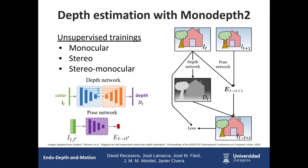MonoDepth2 is the depth estimation neural network we opt for in this work. Its main feature is that it only needs a monocular image at input to estimate its depth map. Another great advantage is that it's trained in a self-supervised way — you don't need ground truth of the images. The basic idea is to train a neural network that learns to predict the appearance of a target image from the point of view of another source image. In monocular training, the two temporally adjacent images are used as source images; in stereo training, the other stereo pair is used; and in stereo-monocular, both temporally adjacent images and the stereo pair are used as sources.